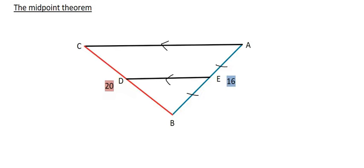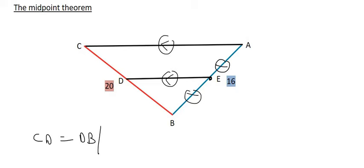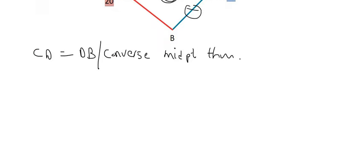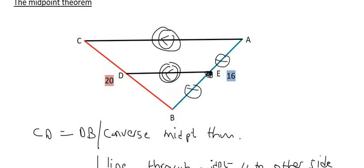Let's try an example: we have a triangle where two lines are given as parallel, and we know E is the midpoint, meaning those segments are equal. The length BA is 16 and the length CB is 20. Because we have a midpoint and parallel lines, we conclude that CD equals DB by the converse midpoint theorem — or 'line through midpoint parallel to the other side.' Therefore CD equals 10 and DB equals 10.